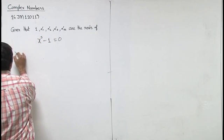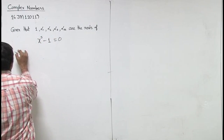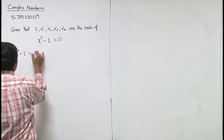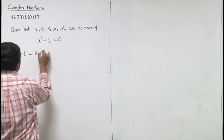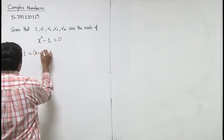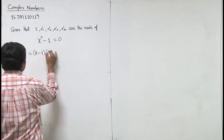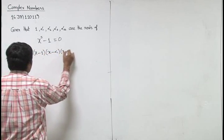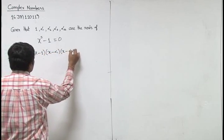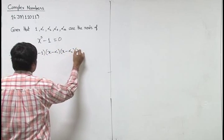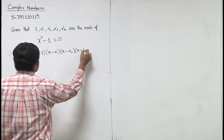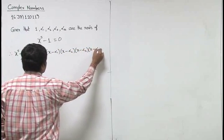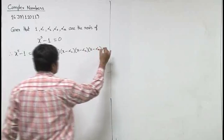Therefore, we can write x to the power 5 minus 1 equal to 0 as (x minus 1)(x minus alpha 1)(x minus alpha 2)(x minus alpha 3)(x minus alpha 4).